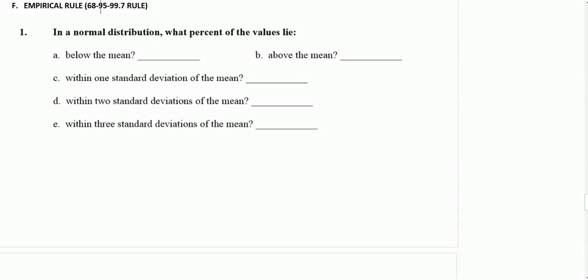Section F, the empirical rule, or the 68-95-99.7 rule.